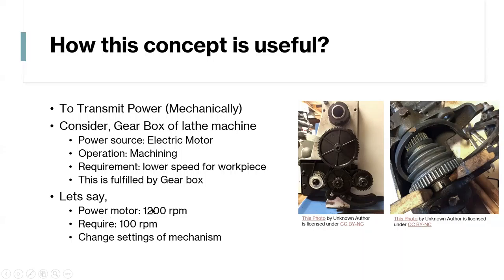Let's say the power motor is running at 1200 RPM. And the required workpiece speed is 100 RPM. So you need to change the settings of the mechanism. So let's say in the gearbox, you have to change some settings here and then you will be able to get your desired RPM. What do you need? So if you don't have such kind of mechanism and you're working on your own project, you might need to develop your own mechanism. You might need to design your own gears so that you get whatever speed or torque you need.